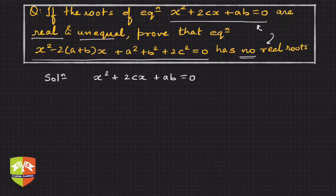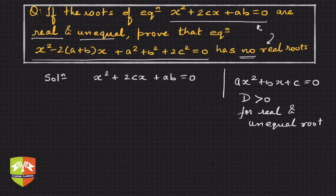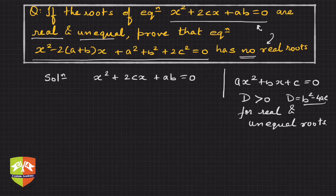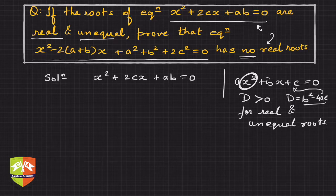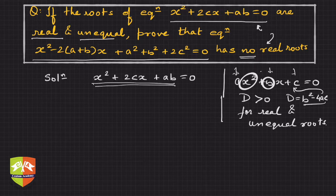For a given quadratic equation ax² + bx + c = 0, D must be greater than 0 for real and unequal roots. D is nothing but b² - 4ac. Here a, b, and c are the coefficient of x², coefficient of x, and the constant term respectively. Don't get confused with whatever a, b, and c are mentioned in context of this general form versus what is given in the actual question — they simply refer to the coefficient positions.